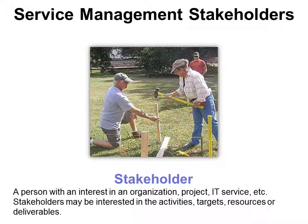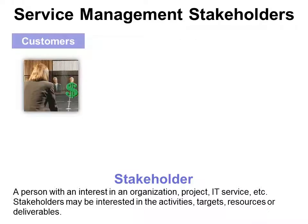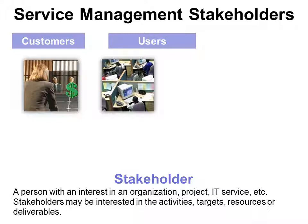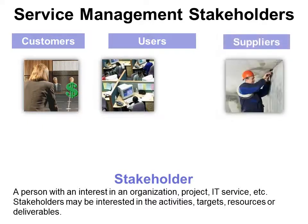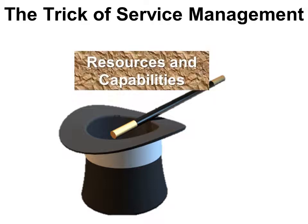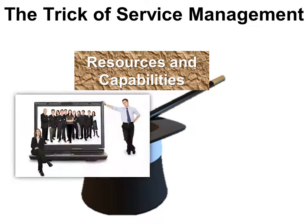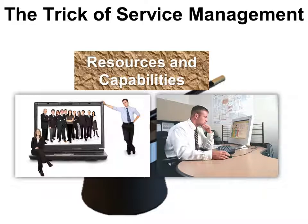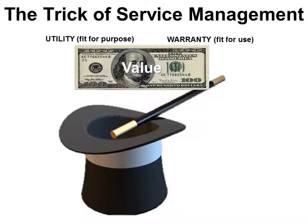That service requires stakeholders — anyone with any interest in the organization, including customers (the people who write the checks), external users (people who use it but don't pay), suppliers, and internal users. The trick of service management is to turn resources and capabilities into value. Resources are the people and the technology they use; capabilities are how well they use those resources. ITIL suggests capabilities are more important — how well you're trained, how well you know what you're doing, how well your team works together. Taking resources and capabilities and turning them into something the customer finds valuable, because it has both utility (fit for purpose) and warranty (fit for use).